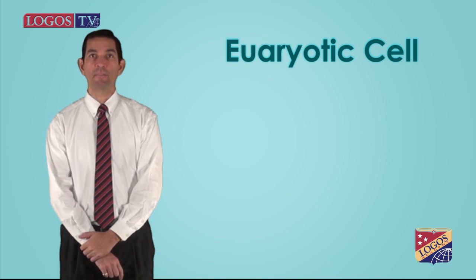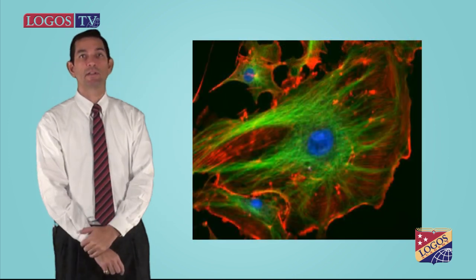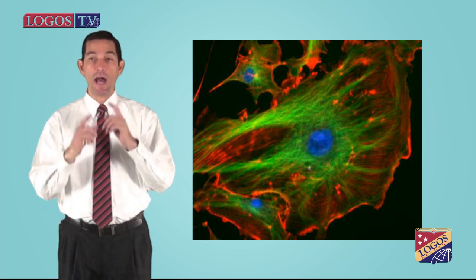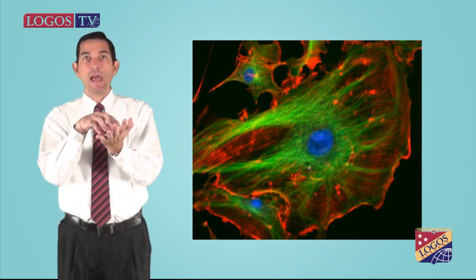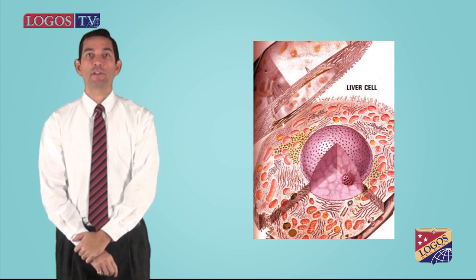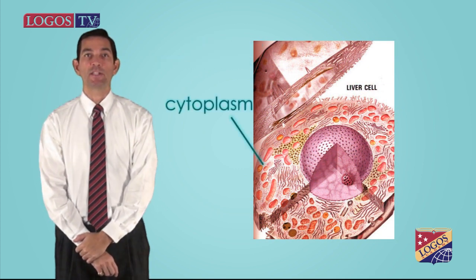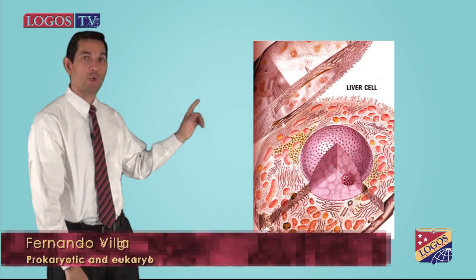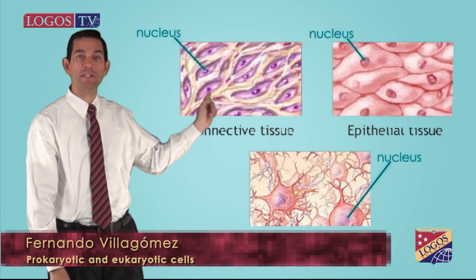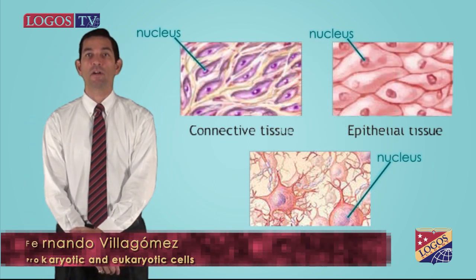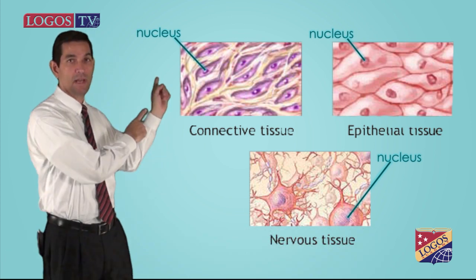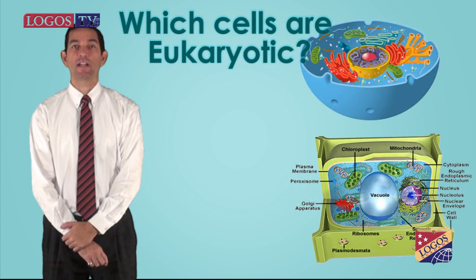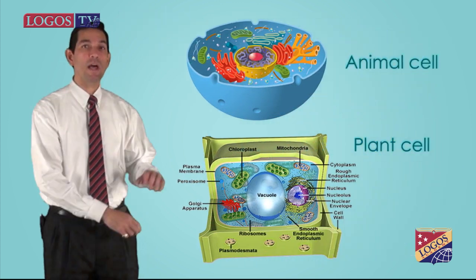Eukaryotic cells are bigger and more complex than prokaryotic cells. Most eukaryotic cells are microscopic, but some can be seen with our eyes, as big as an ostrich egg. All eukaryotic cells have a plasma membrane, many organelles, and genetic material surrounded by a nucleus. The nucleus is the largest and most visible organelle of these cells, as you can see on my left.